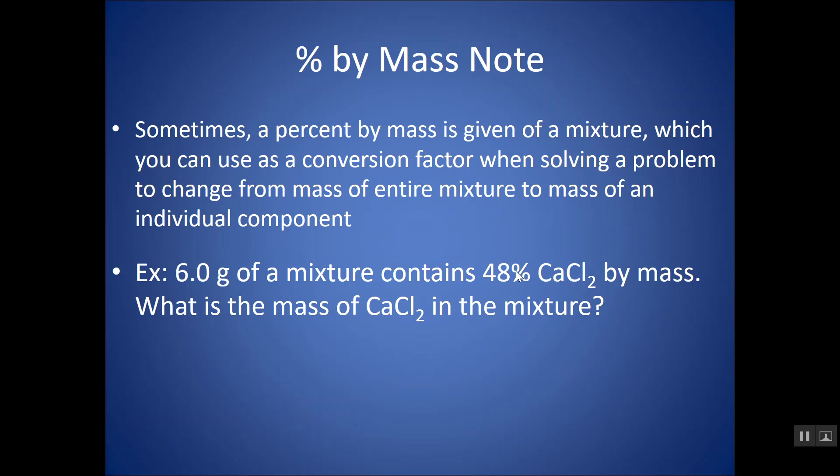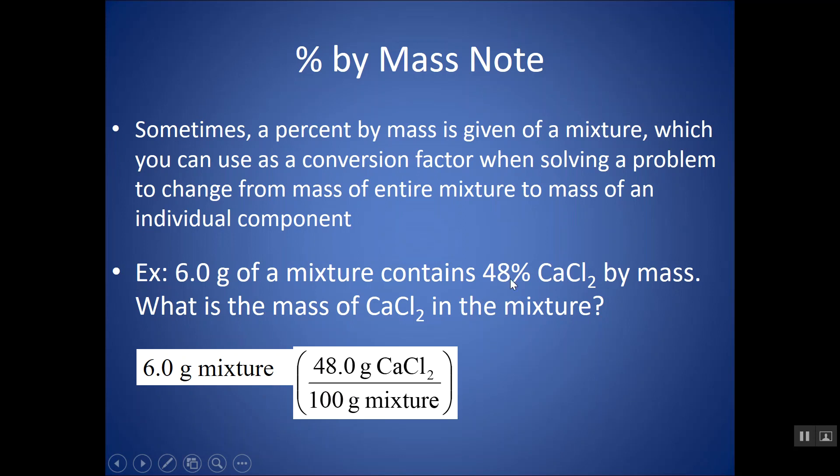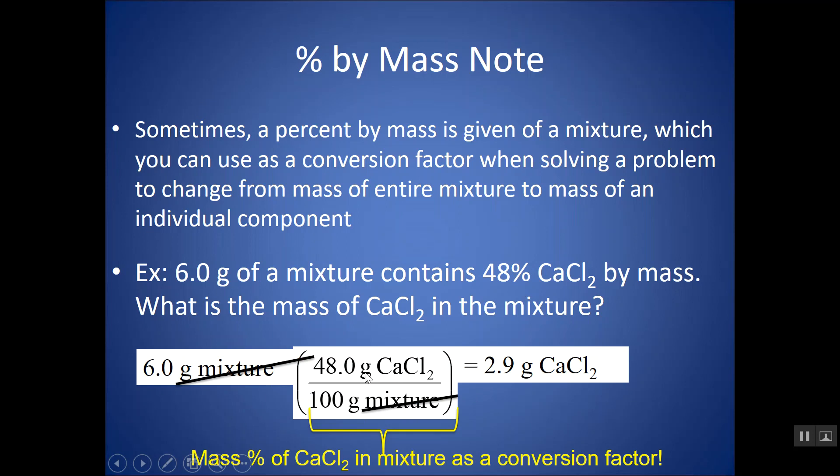So, whenever I see a percent by mass, I like to use that as a conversion factor in this kind of way. So, I would start with 6 grams of the mixture. And I could say, I could turn this into a conversion factor if you want to show this with dimensional analysis. I could say for every 100 grams of mixture, there's 48 grams of CaCl2. Grams of the mixture would cancel and I'd be left with CaCl2. Or you can think of it as I'm taking 48% of 6 grams. I could be doing 6 times 0.48. So, either way, I'm showing you how you can use this. If you've given the percent, you can put it over 100. And this will allow you to make your own conversion factor if you don't feel comfortable multiplying by a decimal of a percent.